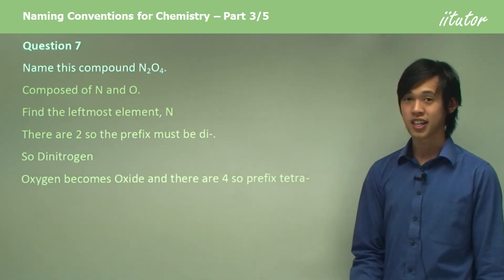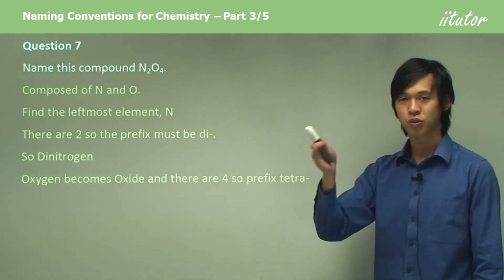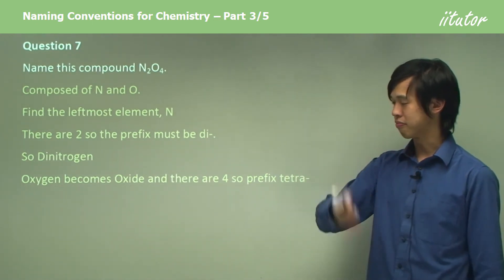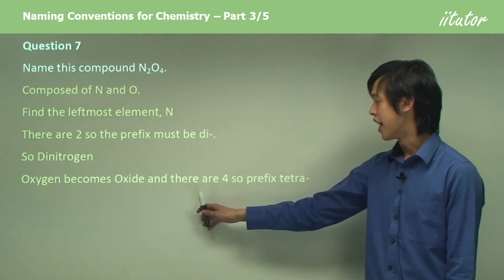Now, oxygen becomes oxide, remember, because it is more to the right. So, we drop the second syllable, and we add "-ide", and there are four of them.